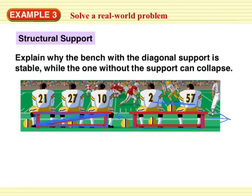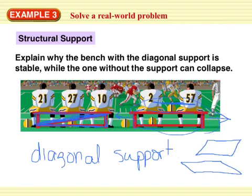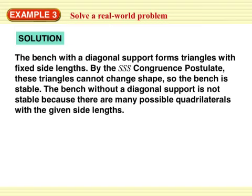This diagonal right here allows for the triangles not to change shape. So the bench is stable. Basically, a diagonal support gives stability. No diagonal support means that your shape is not stable, because there are many possible quadrilaterals with the given side lengths. As I move this thing left and right, I have many different shapes that all have the same side lengths. The diagonal makes it a fixed shape, and it cannot change into any other quadrilaterals. So the diagonal support is what you're looking for. Go ahead and read through it, and then pause.